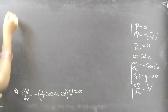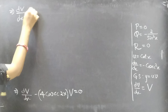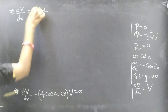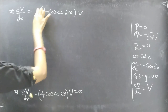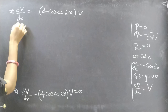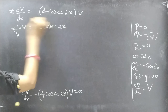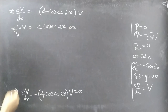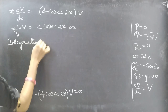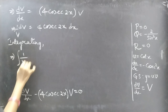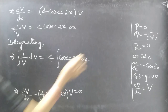Now we need to separate the variables. We can write the equation as dV/dx = 4·csc(2x)·V, which gives (1/V)·dV = 4·csc(2x)·dx. Now we can perform integration: ∫(1/V)dV = 4·∫csc(2x)dx.